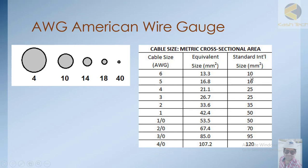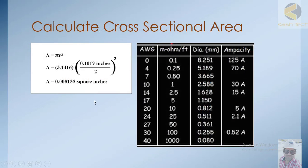AWG 6 is equivalent to 13.3 mm² while the closest international standard size is 10 mm². AWG 5 is equal to 16.8 mm², with the nearest international size being 16 mm². Internationally, cables are available in standard sizes: 10, 16, 25, 35, 50, 70 mm² and so on.